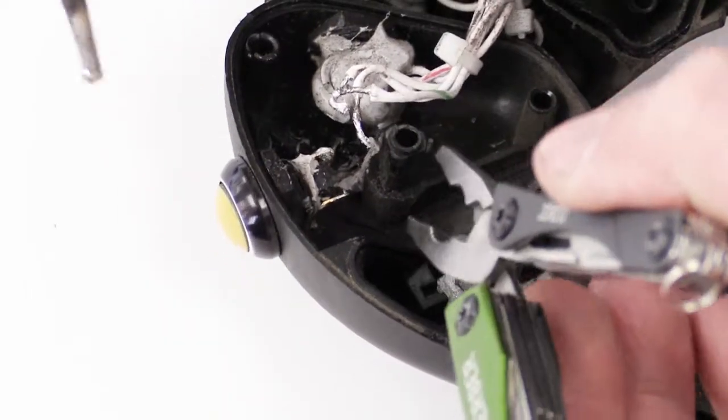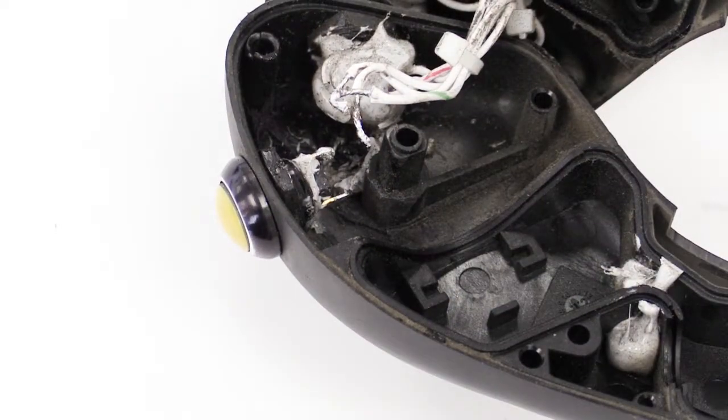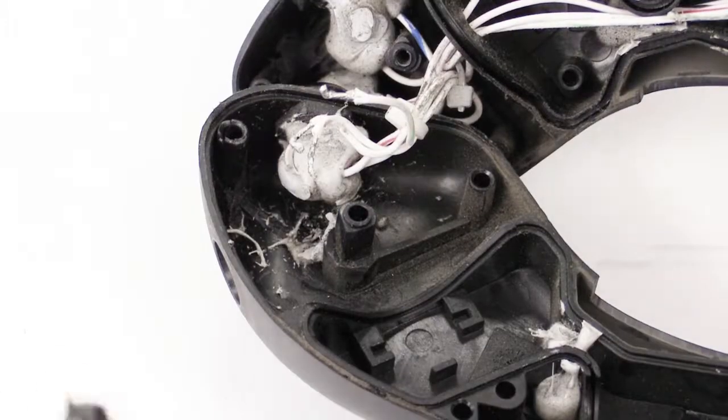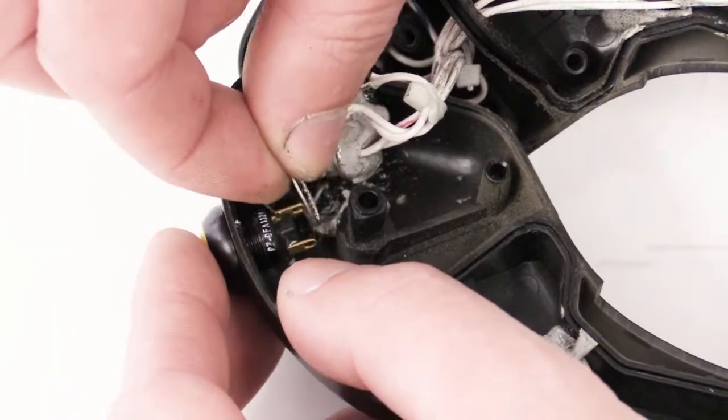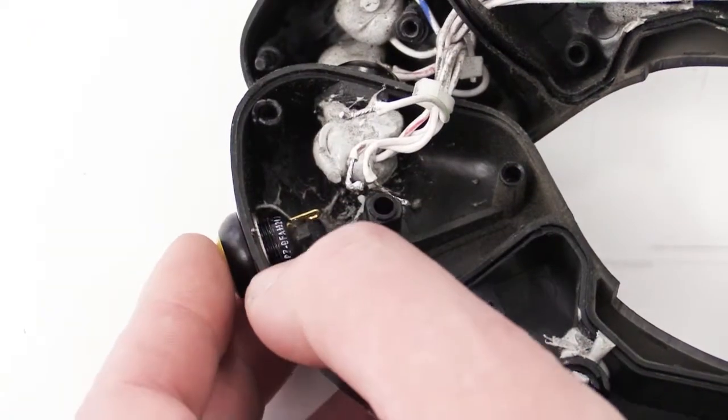Now that the wires have been removed from the switch, remove the back nut from the switch and remove the switch from the housing. Continue by installing the new switch with supplied star washer and retaining nut.